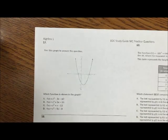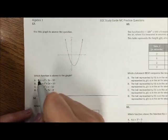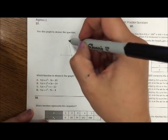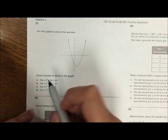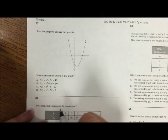Alright, we're going to work on problems 57 through 62. Alright, 57. Use this graph to answer the question. Which function is shown on the graph? So let's look at what we have. First off, we have an upward-opening parabola, so they need to all be positive, which we're good.